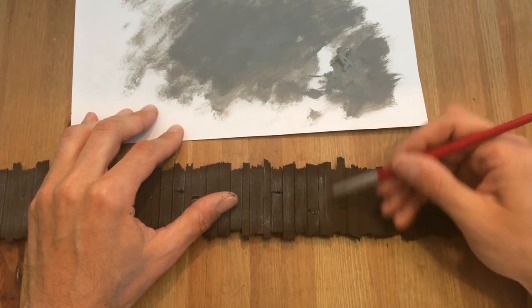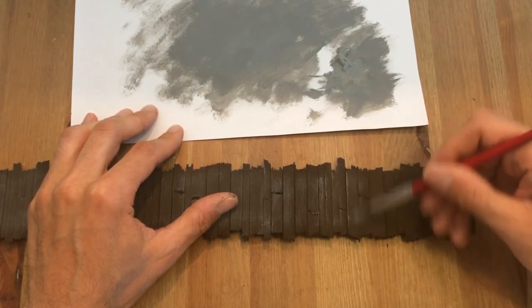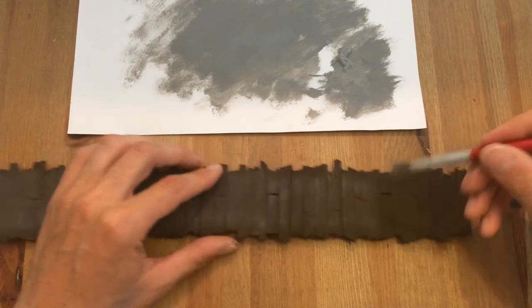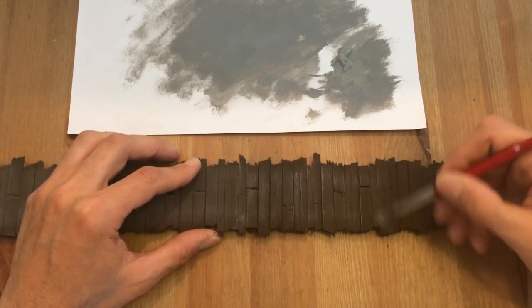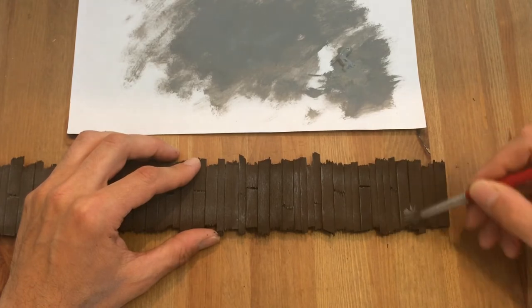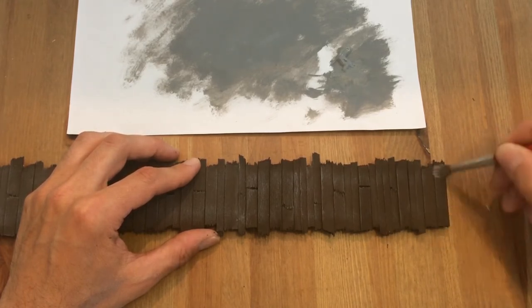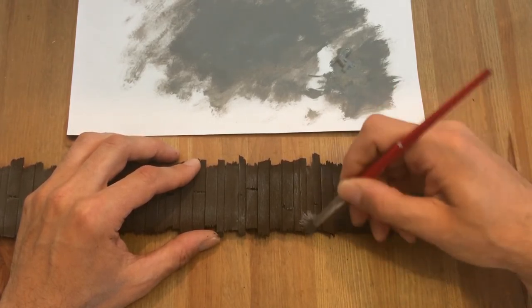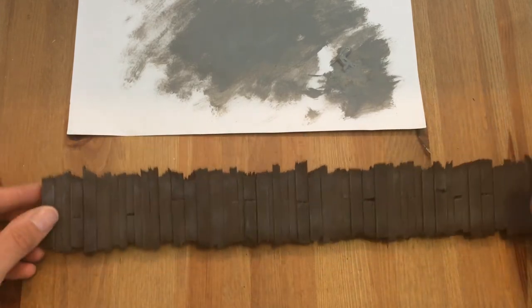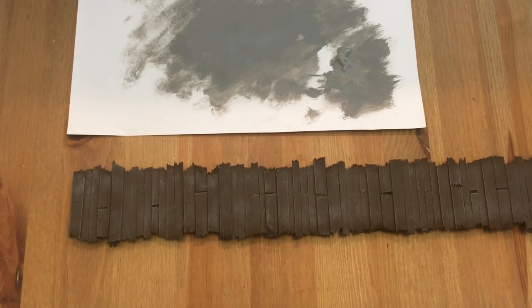We're just adding a nice dry brushing, focusing in the center of the planks and moving outward. You can see how it's highlighting really well the edges of those planks that are sticking out higher than the others. And as you can see, it's giving us a very nice effect along the entire plank.